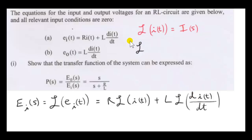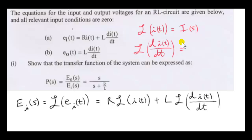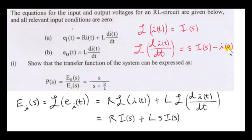Let's look at the Laplace transform of the derivative. You can look this up — it's S times big I of S minus little i at time zero. This is the initial current. Little i of zero is an input condition, and we were given that all relevant input conditions are zero. So i at time zero is zero, and we're left with just S times big I of S.